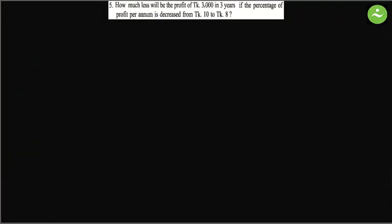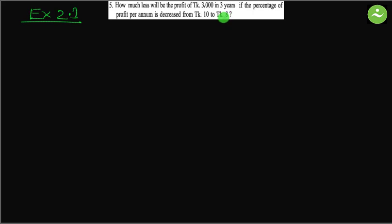Assalamualaikum, greetings from Talent Upskill Class 8 English Version. Math Exercise 2.1, number 5: how much less will the profit be — meaning, how much will profit decrease on 3000 taka in three years if the percentage of profit per annum is decreased from 10 taka to 8 taka? The rate of profit decreases from 10 to 8, and the question asks how much total profit will decrease in three years.